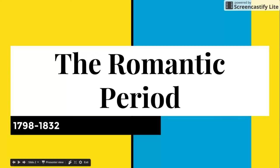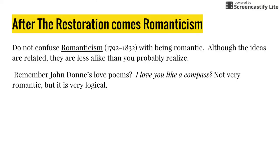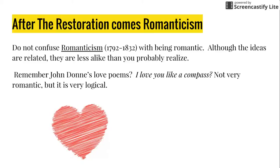The Romantic period ran from 1798 to 1832. The Romantic period is not necessarily connected with romance — don't confuse Romanticism with being romantic. Although the ideas are related, they are less alike than you probably realize. We just talked about John Donne's poetry — 'I Love You Like a Compass,' and a flea being like bodies intermingled. Not very romantic, but there are some very logical points connected there.